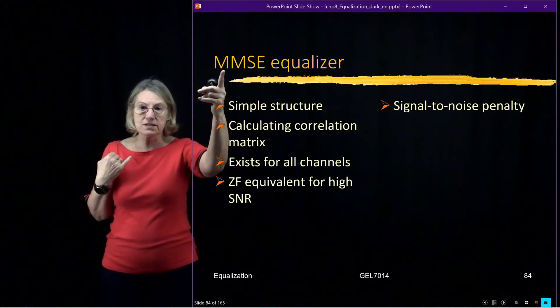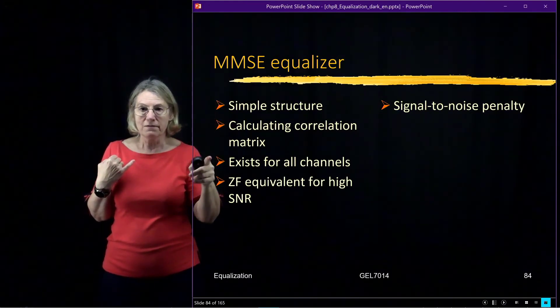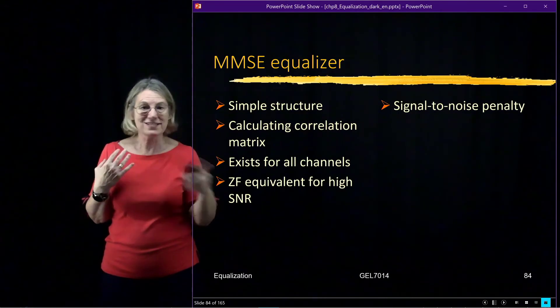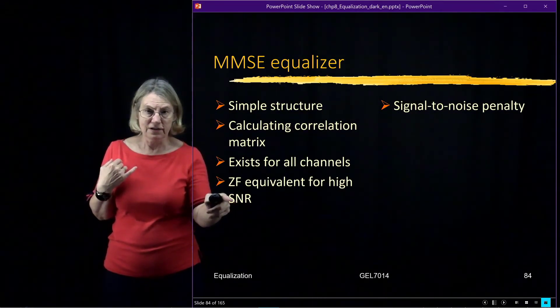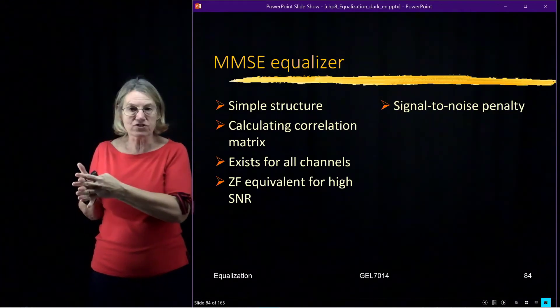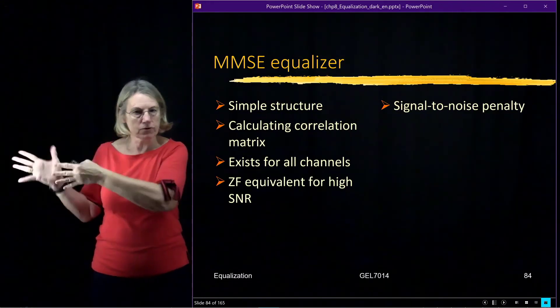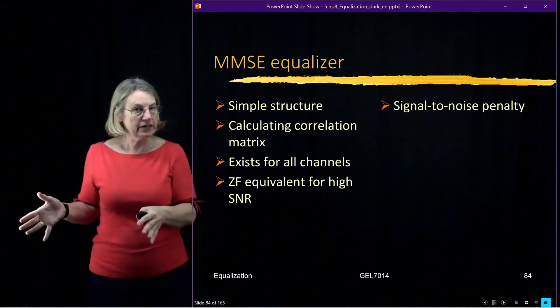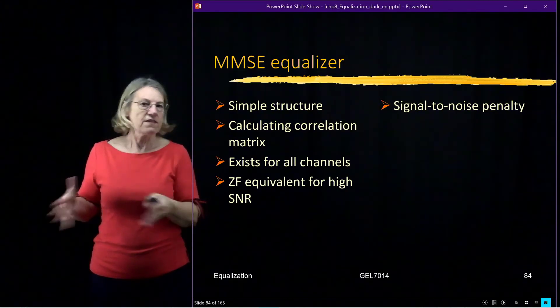And so this filter is going to try and minimize that ISI, and it's going to be the same filter as the zero forcing filter. So there's a place, a region, where these two equalizers are actually equal, the zero forcing on the MMSE. And that's in very low noise or zero noise. So then they would be the same filter.